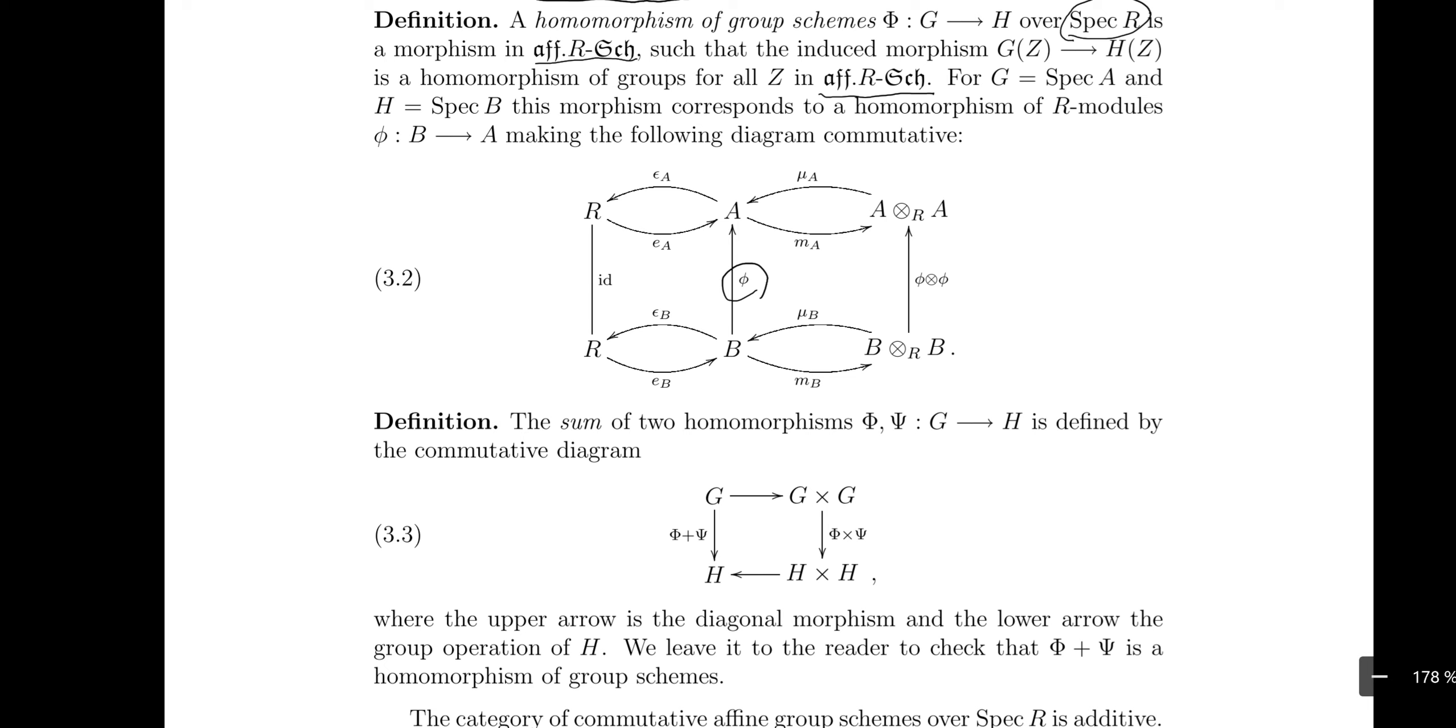Translate into the language of R-modules. We are considering morphisms of finite group schemes, so we translate into morphisms of rings. For G equals spec A and H equals spec B, the morphism corresponding to homomorphism of R-modules φ from B to A makes the following diagram commute. This is really a big diagram, so many things to check.